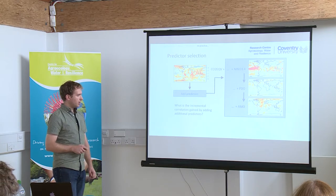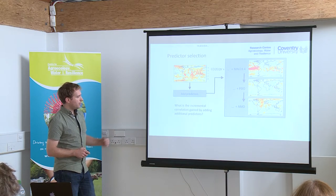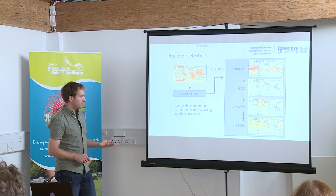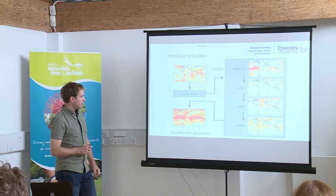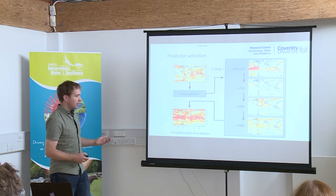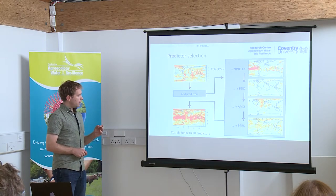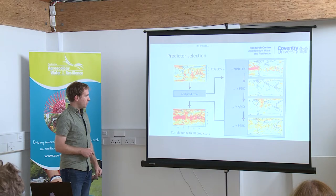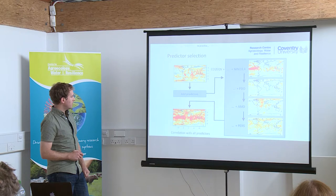This is the Atlantic Multidecadal Oscillation, which is quite important in the Atlantic and also parts of Africa. After taking all of those, we look at whether we can gain additional information using persistence — simply taking the climate of the preceding month. When we've identified the useful predictors, we put those into the multiple linear regression model and find a correlation that is quite a lot higher than we would get from climate change alone alone.